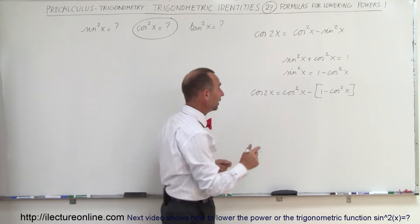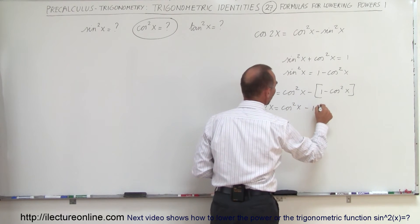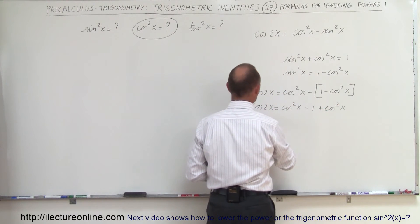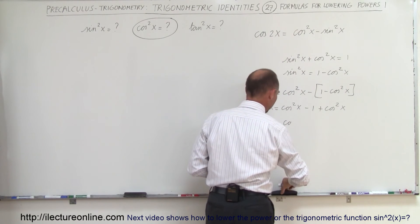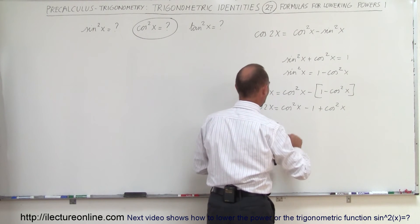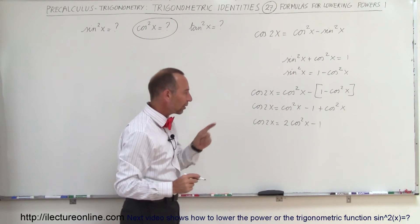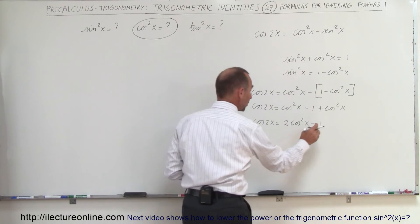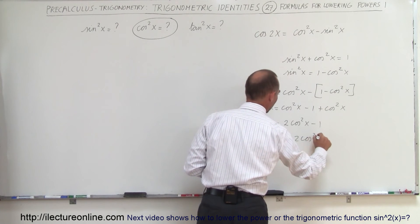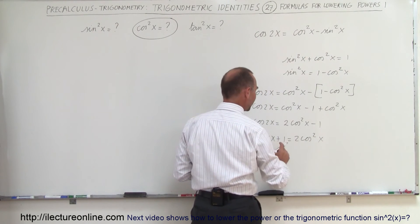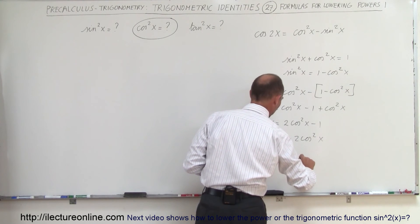If we apply the negative, we end up with cosine of 2x equals cosine squared of x minus 1 plus cosine squared of x. We can add them together, so now we have 2 times cosine squared of x minus 1. Then if we solve for cosine squared of x, we move the negative 1 over, giving us cosine of 2x plus 1 equals 2 times cosine squared of x. Dividing both sides by 2, we get cosine squared of x equals the cosine of 2x plus 1, divided by 2.